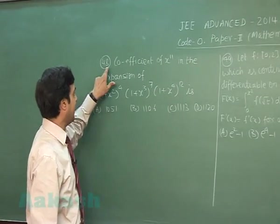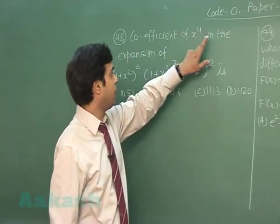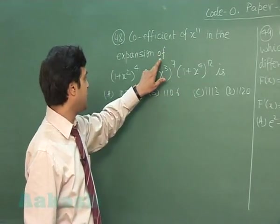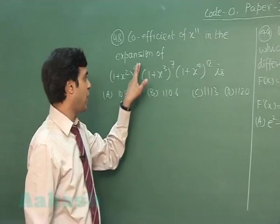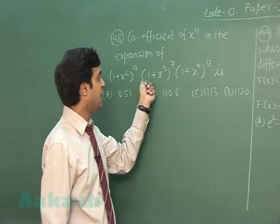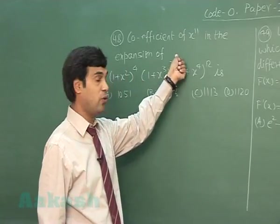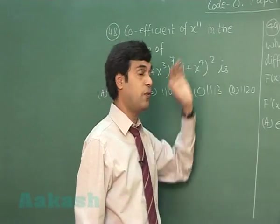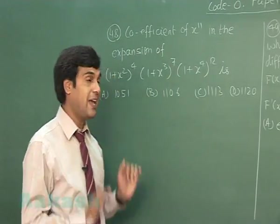Let's go for question number 48. Coefficient of x^11 in the expansion of (1 plus x²)^4 multiplied with (1 plus x³)^7 multiplied with (1 plus x⁴)^12 is.